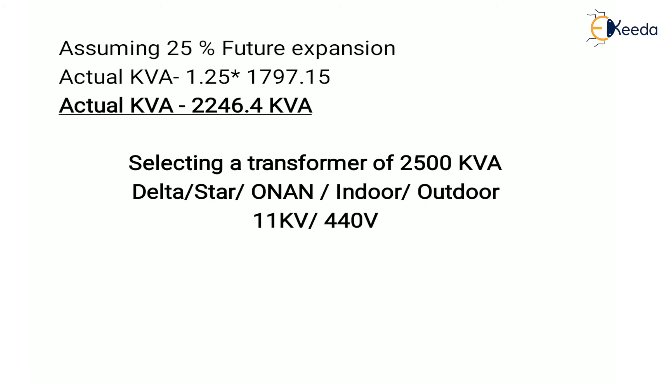Based on this actual KVA value, we select a standard transformer rating of 2500 KVA. As it is a distribution transformer, it will be delta-star connected, with ONAN (oil natural, air natural) cooling, suitable for indoor-outdoor installation, and will be a step-down transformer of 11 kV / 440 V.